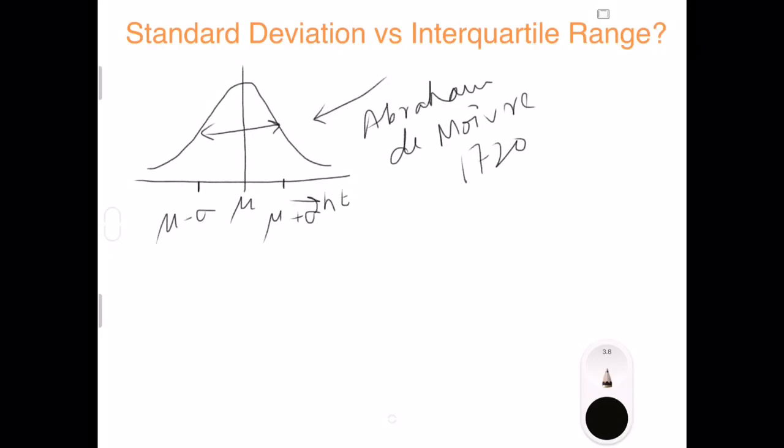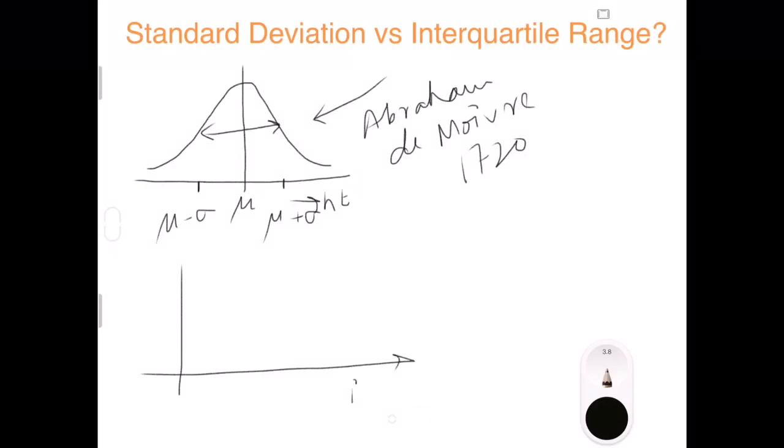Now what is this normal distribution, then what is long-tail distribution? If you are representing income and number of people on the y-axis and income on the x-axis, say this is 200k dollars.